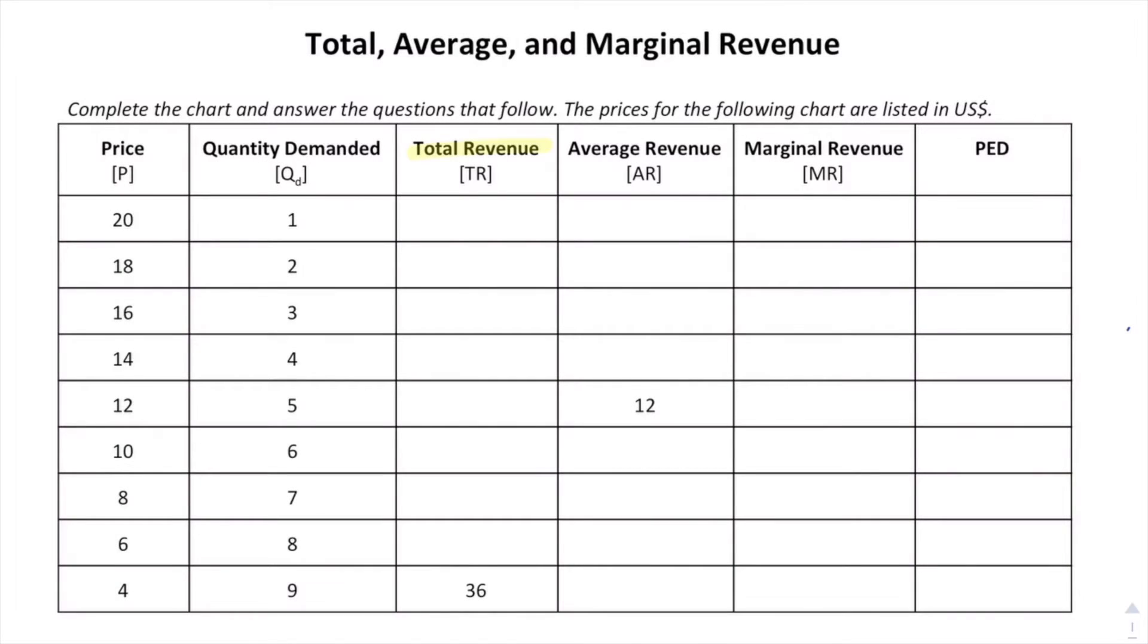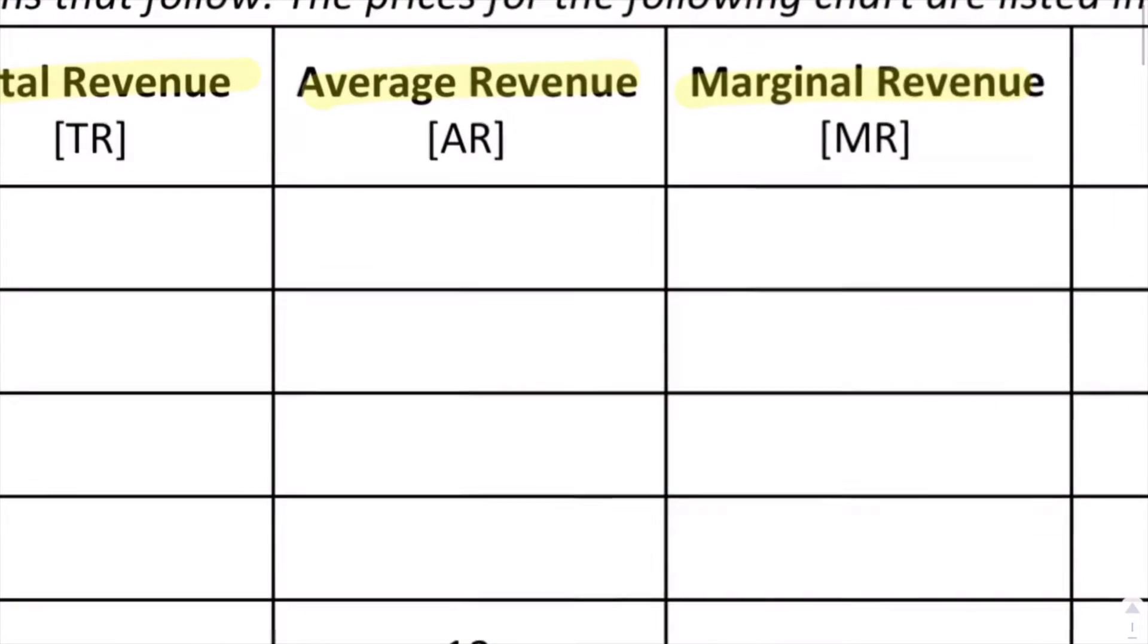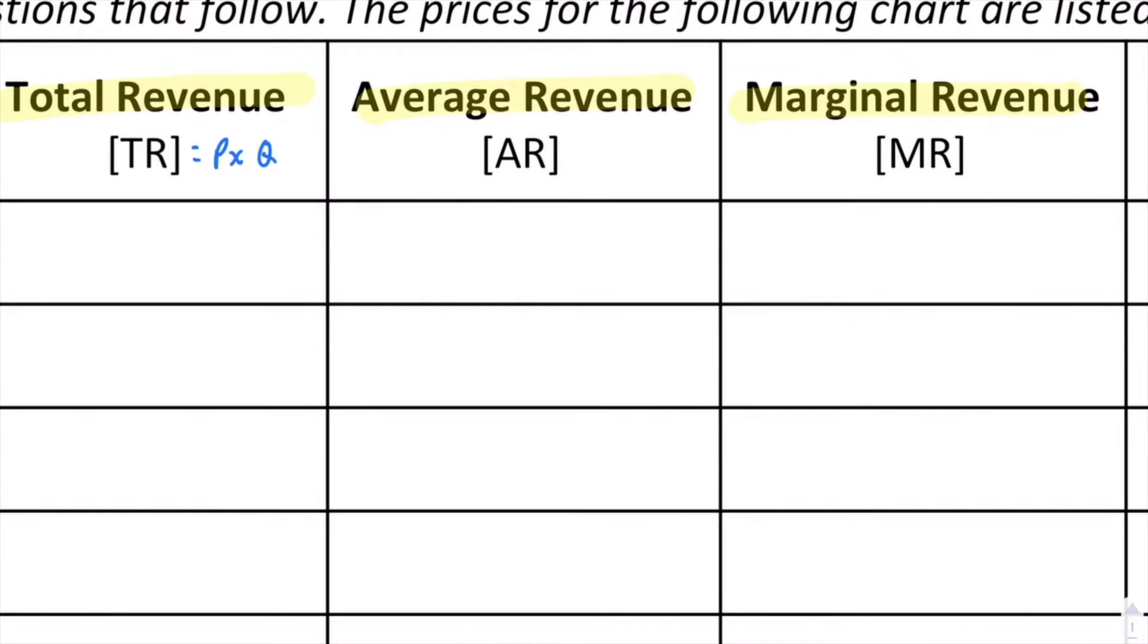Before we can start looking at total, average, and marginal revenue, let's go ahead and graph these values. When we zoom in I want to show you what the equations are. Total revenue is always just price times quantity. Average revenue is price times quantity but divided by the total quantity. So in this case it would just be price.